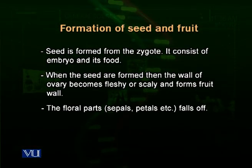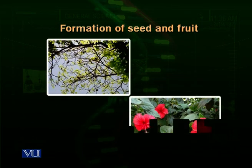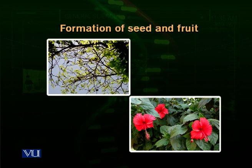The floral parts — sepals and petals — fall away from the ripened ovary. In a picture of the hibiscus flower, you can see its flowering parts, including its anthers upon the stamen, which are exposed outside. In the picture next to it, you can see fruits of a wild plant shown in brown color.